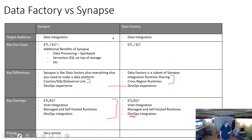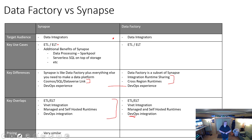Microsoft Fabric throws a few spanners in the works for that decision, so you need to think about what your strategy is going to be there as well. Price-wise, Synapse and Data Factory pricing is very similar — almost identical in a lot of ways. There are a couple of extra pieces on the price table on Azure about Data Factory which might be worth checking out.